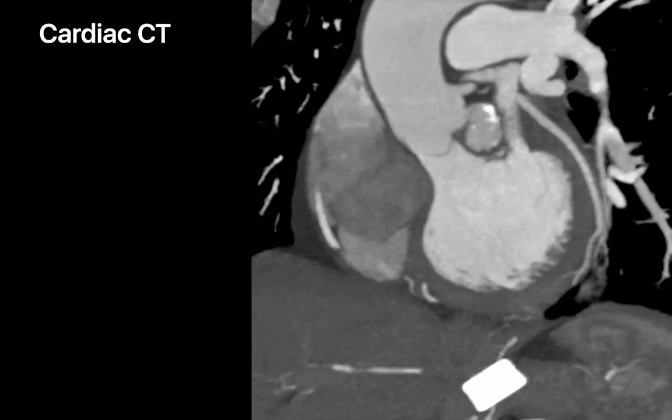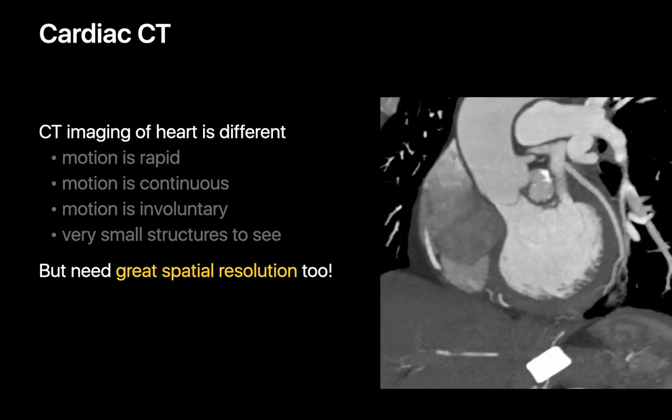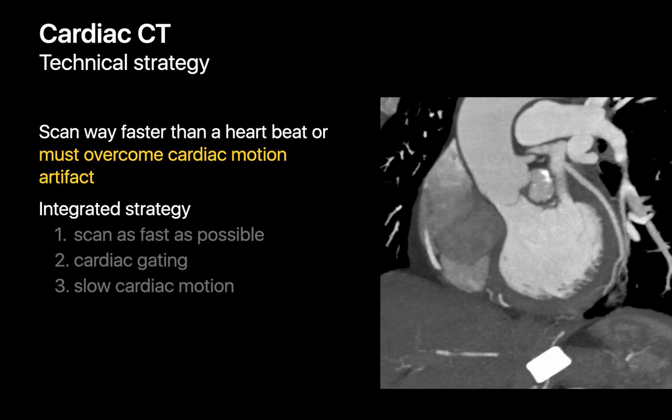Now let's talk about cardiac CT. There are few objects in the body that are as challenging to do a great CT of than the heart. Not only do we have to image something that's moving quickly and constantly — which the patient has practically no control over — but we also have to do it in a way that allows us to see very small structures well. If we're hoping to study the heart in detail, we either have to complete a CT scan in less time than a heartbeat, or we have to somehow overcome cardiac motion artifact.